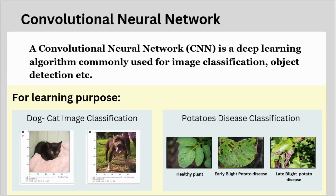Moving towards machine learning and deep learning algorithms used in implementation: Convolutional Neural Network (CNN) is a deep learning algorithm commonly used for image classification, object detection, etc. For learning purposes, I created two projects based on CNN: dog-cat image classification and potato disease classification. The dog-cat model classifies images of dogs and cats, while the potato disease classification project helps farmers detect disease in plants so they can be treated on time.